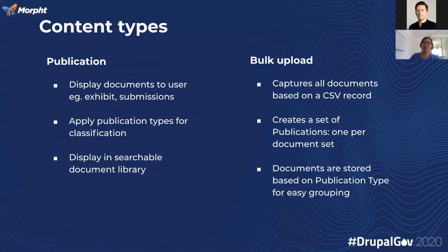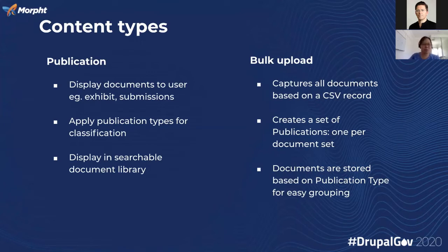In bulk upload, we capture all the documents based on the CSV record, and then we create a set of publications — one per document set. Meaning, if a publication has more than two different files — for example, CSV, Excel, and so on — we are able to group them. Documents are stored based on publication type for easy grouping. This means if the publication belongs to exhibit, all the files will be kept in the private directory under the exhibit folder.